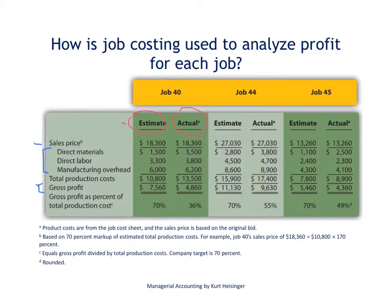Let's focus on Job 40 and look at whether our actual results were better or worse than our initial estimate. As a company, we have chosen to establish a sales price based on a markup of 70% of our product costs. For this particular company, we are establishing a sales price with a 70% markup on our production costs of $10,800. So 70% of $10,800 is $7,560, and $7,560 plus $10,800 establishes our sales price of $18,360.